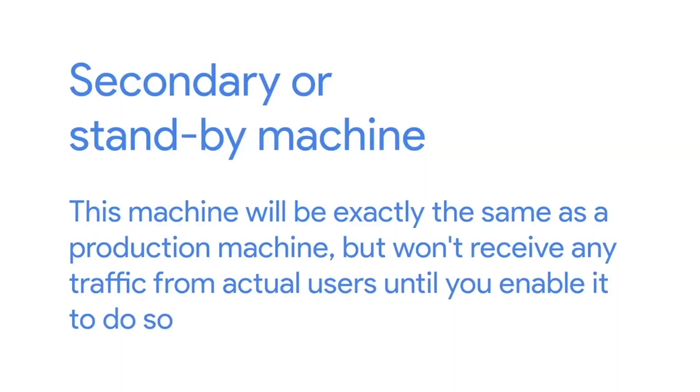If you're in charge of an important service that you need to keep running during a configuration change, we recommend that you have a secondary or standby machine. This machine will be exactly the same as a production machine, but won't receive any traffic from actual users until you enable it to do so. Once you've tested your changes in the test environment and are ready to deploy them to production, first apply the changes to the secondary machine.